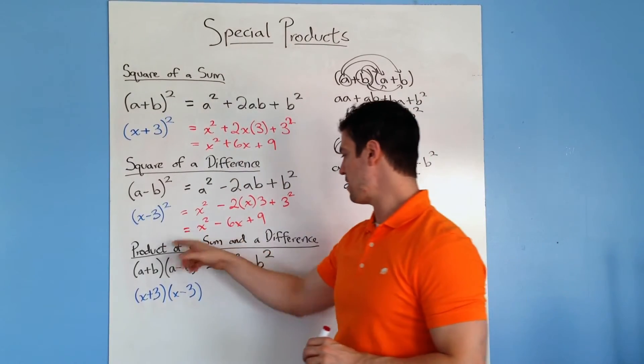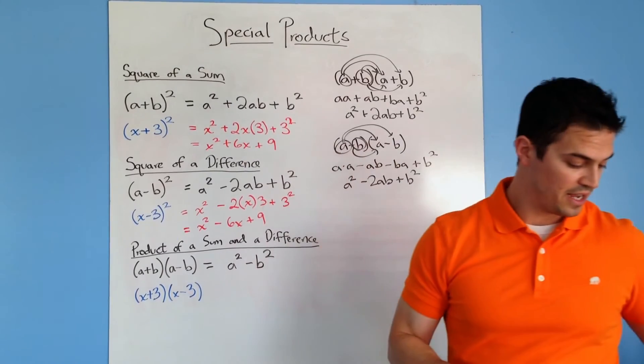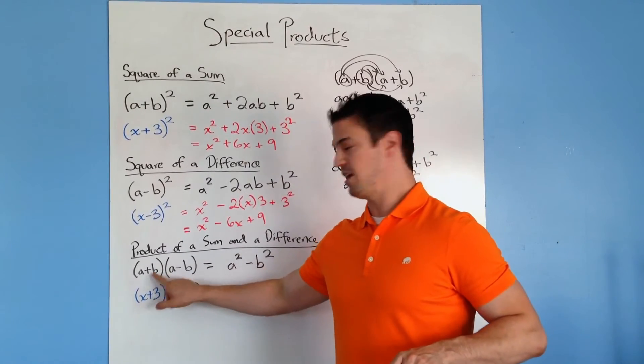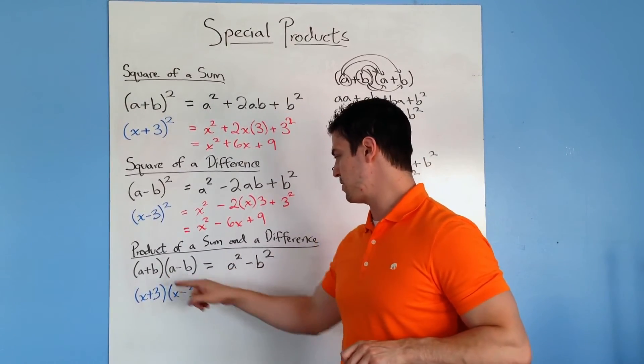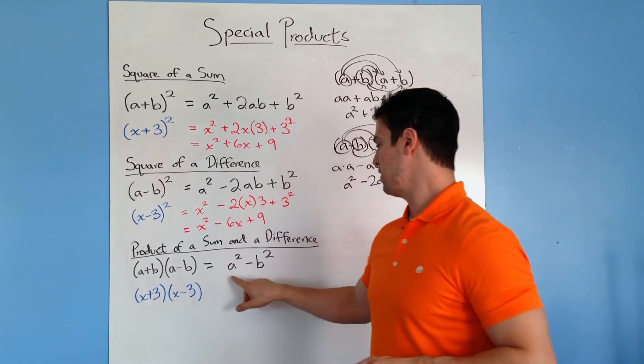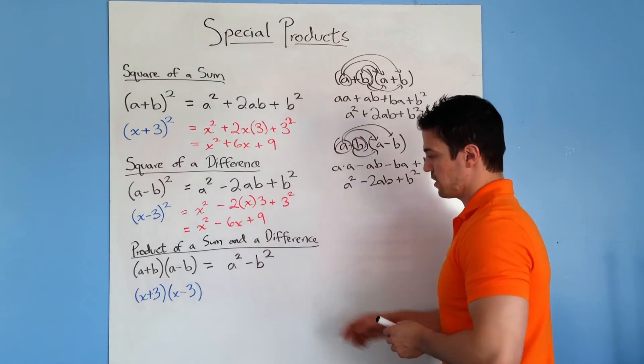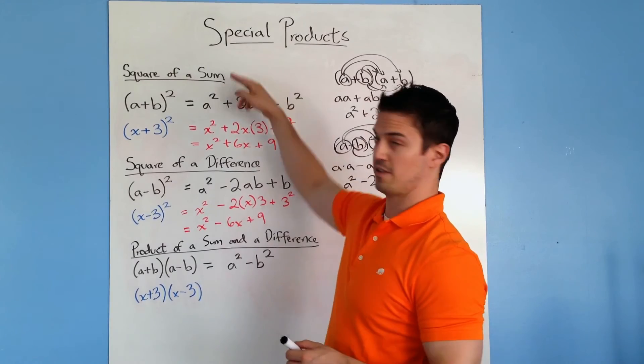And last but not least, we have the product of a sum and a difference. Here's our sum, a plus b. Here's our difference, a minus b. So when they're the same like this, you end up with a squared minus b squared. So it kind of simplifies a little bit easier than the previous two.